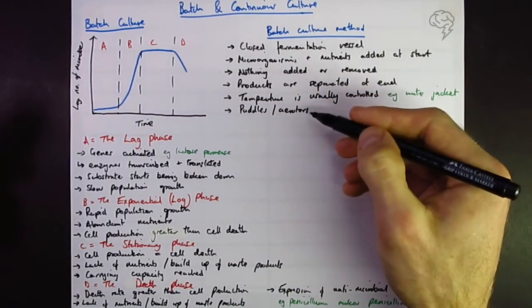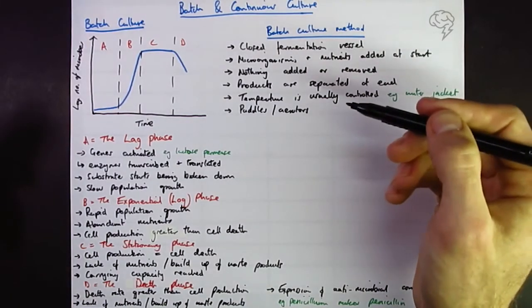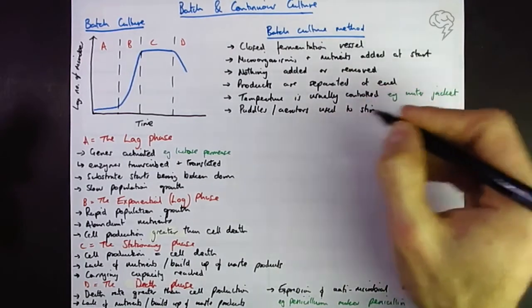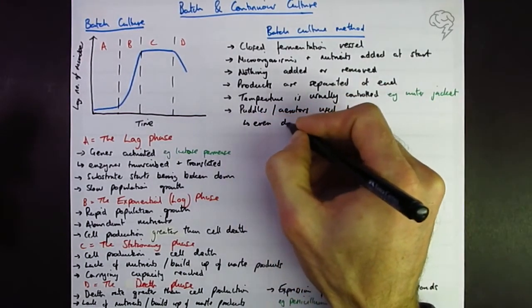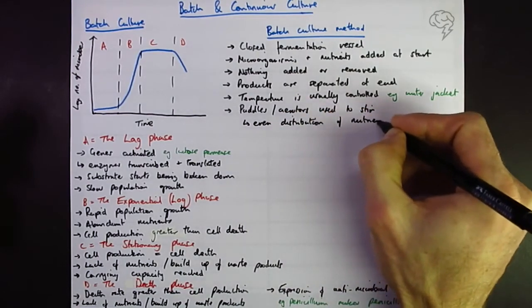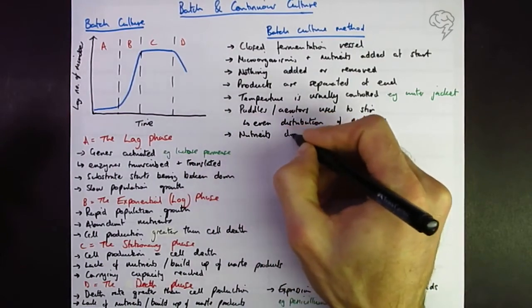This is often asked: why do you need to use sterile air? Well, obviously you don't want to introduce any other microbes into your batch fermenter. And finally we can say that at the end the nutrients are depleted.